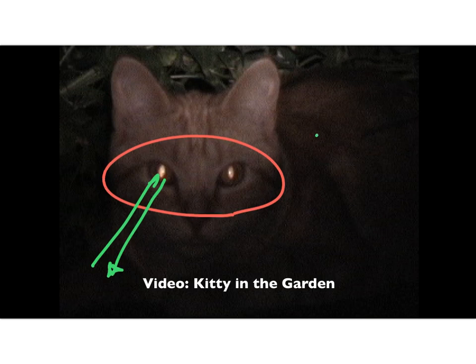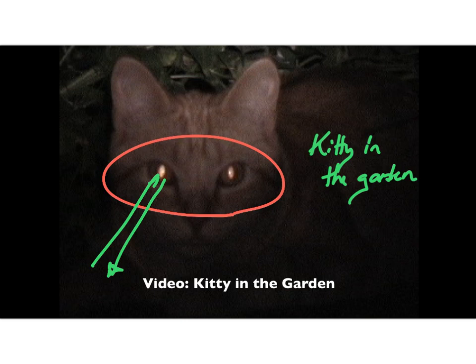I have a supplementary video called Kitty in the Garden — that's me in my back garden with my headlight on just after parking my bike. I pan the headlight around and spot a little kitty. And I can show that if I take the light off my head and put it to the side, I get a reflection from the front of the eye but I don't get the eye shine.